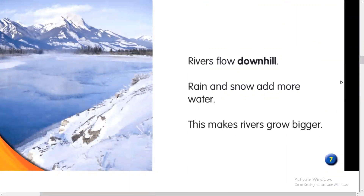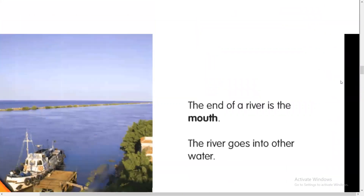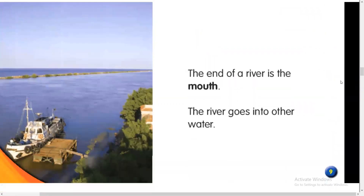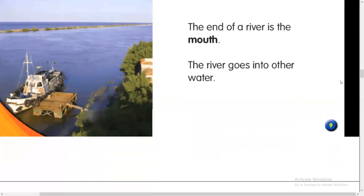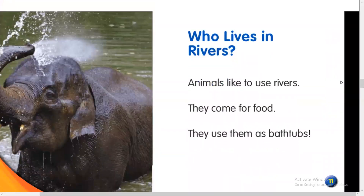This makes rivers grow bigger. The end of a river is the mouth, where the river goes into other water. Who lives in rivers? Animals like to use rivers — they come for food and they use them as bathtubs.